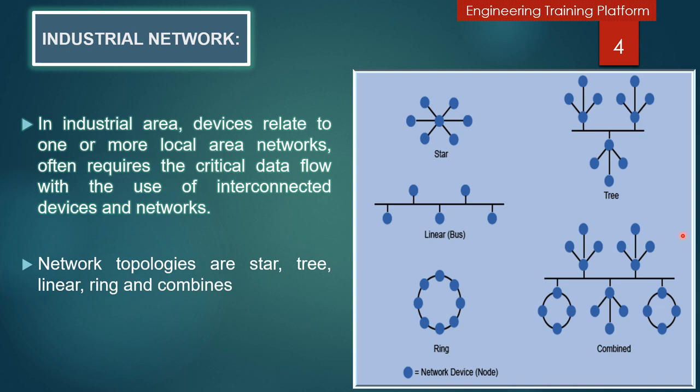This often requires intelligent devices such as PLCs, drives, computers, HMIs, and some actuators and sensors to be interconnected by one or more local area networks. A local area network is a communication system designed for private use in a limited area used in industrial applications, and it must be able to operate reliably in conditions that are unsuitable for office equipment.